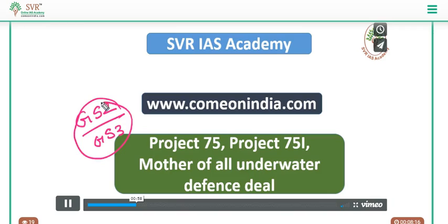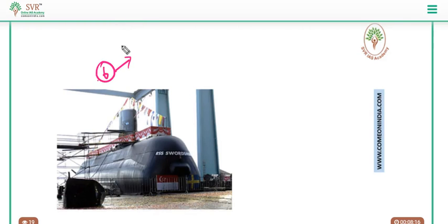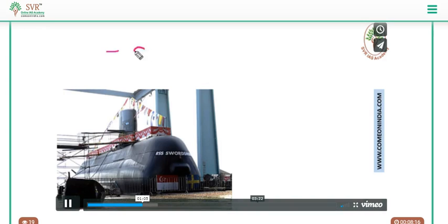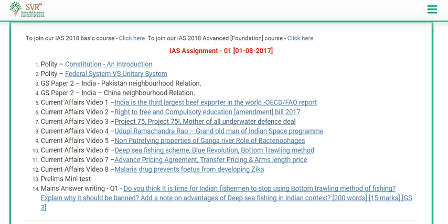Project 75i means India will spend nearly 70,000 crore rupees to indigenously develop 6 advanced submarines with the help of a foreign company and technology transfer. The fourth video lecture published today is about Udupi Ramachandra Rao, simply called UR Rao, who is the grand old man of the Indian space program.